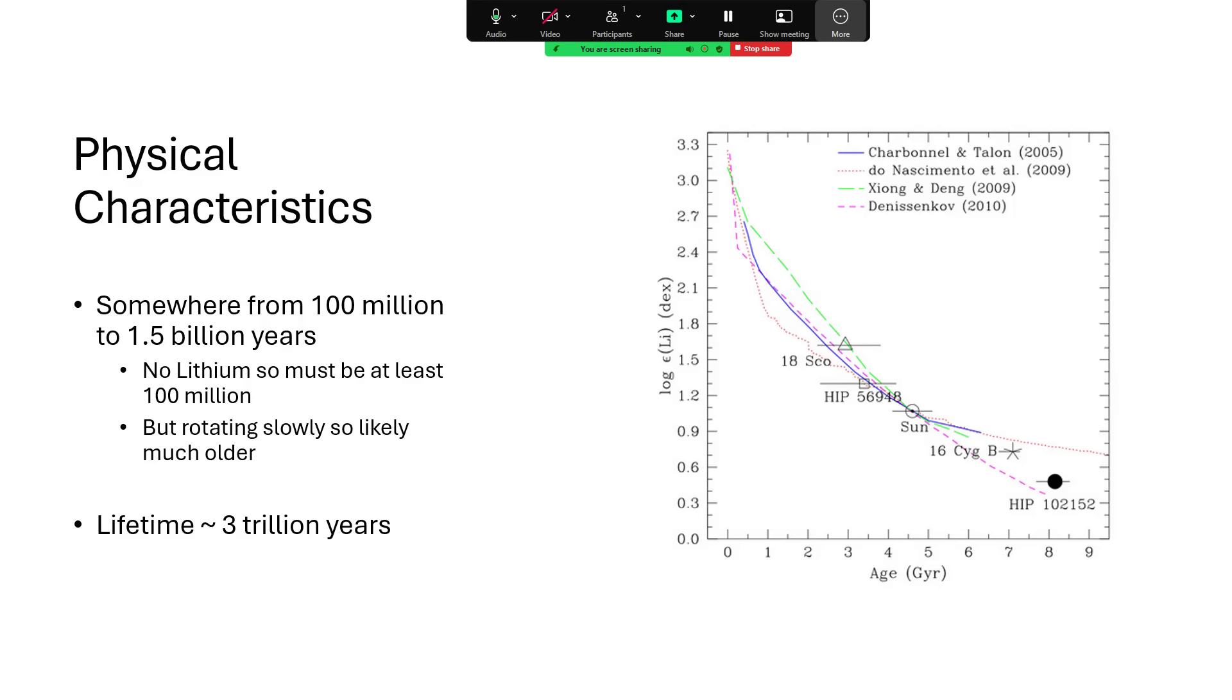And in terms of lifetime, at such a tiny mass, it hasn't got much fuel, but it's burning it so incredibly slowly. And it will burn it all because these little red dwarf stars are fully stirred, fully convective. They access all the available hydrogen, unlike a star like the Sun that will be very wasteful. And so this guy is going to live around 3 trillion years. Quite incredible. Much longer than the current age of the universe.